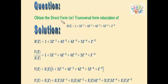In this problem we need to obtain the direct form for H equals 1 plus 3z inverse plus 4z power minus 2 plus 4z power minus 3 plus 3z power minus 4 plus z power minus 5.